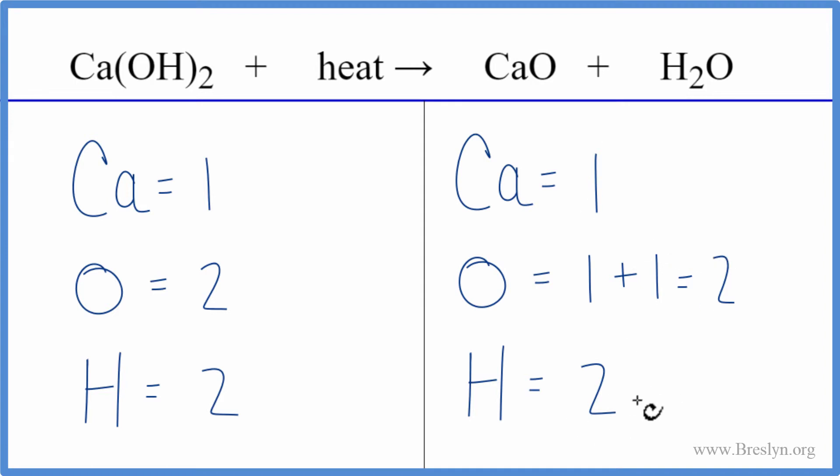Everything is the same on both sides so we're done. This equation is balanced. The thing that people have problems with: really realize that this two applies to everything in the parentheses and on this side make sure you count both of the oxygen atoms. But that's it, this is the balanced equation for calcium hydroxide decomposing.